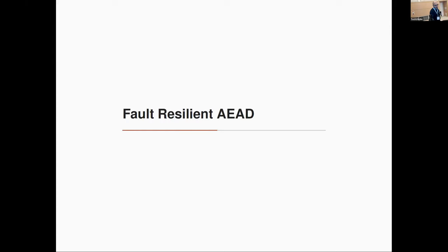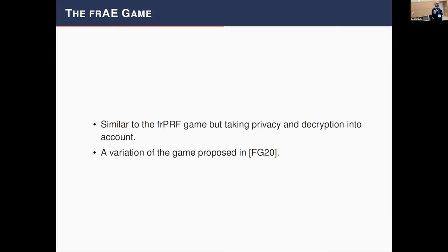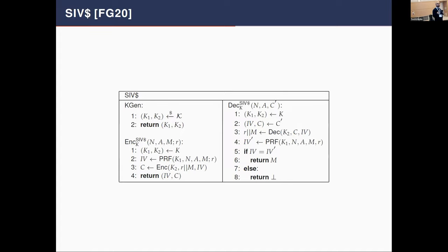For fault-resilient AE, the security game is similar to the PRF but also accounts for privacy and decryption. This is a variation of the game proposed by Fischlin and Günther at CCS 2022. They proposed SIV-random: generate two keys, apply a PRF to the message with a random salt (similar to our FR-MAC), then perform nonce-based encryption also encrypting the random salt. Decryption checks the IV at the end.